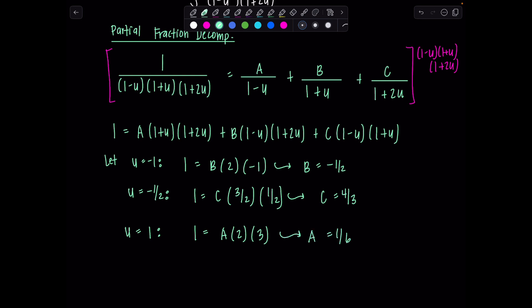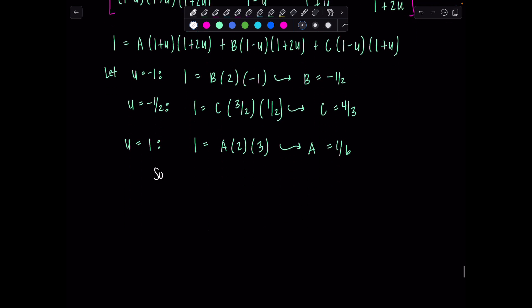Okay, back to the integral. We've got our decomposition, how exciting. So we have integral. A was 1 sixth over 1 minus u. B was negative 1 half, so I'll just put minus 1 half over 1 plus u. And then c is 4 thirds over 1 plus 2u, du.